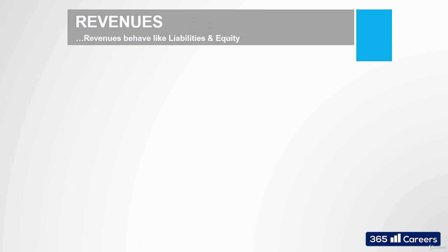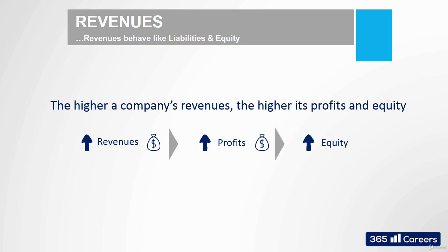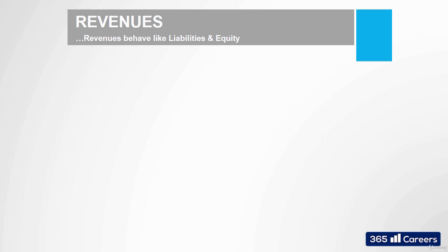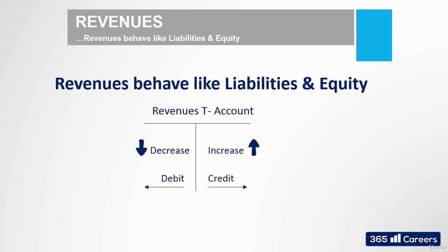Revenues are the first item that we will consider. They are the main factor that influences a firm's net result. If revenues are higher than costs, then the firm will produce a profit. Given that profits increase a firm's equity, we can think of revenues as an item that ultimately increases equity. Therefore, it will behave like equity. We will credit it when it increases, and we will debit it when it decreases.